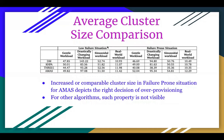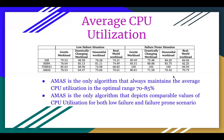For example, in the sinusoidal workload columns, AMAS shows a higher value of 54.81 in the failure prone situation, while all other algorithms show a lower value in the failure prone situation. This table shows the average CPU utilization values for the different scenarios. AMAS is the only algorithm that always maintains the average CPU utilization in the optimal range of 70 to 85%. The high utilization values of THRESH1 are attributed to its strict and non-adaptive inertial policy. Another interesting observation is that AMAS is the only algorithm depicting comparable CPU utilization values for both low failure and high failure scenarios.